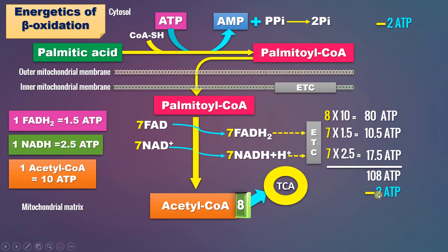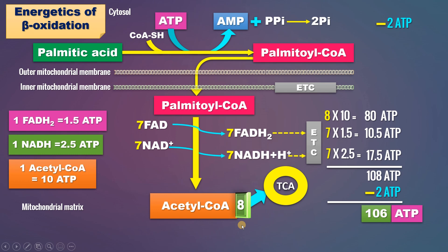We must subtract the 2 ATP that were utilized in the activation step. So the total number of ATPs produced per complete oxidation of palmitic acid through beta oxidation is 106 ATP. This is how we calculate ATP production per palmitic acid in beta oxidation — 106 ATP per complete oxidation of palmitic acid. Thanks for watching.